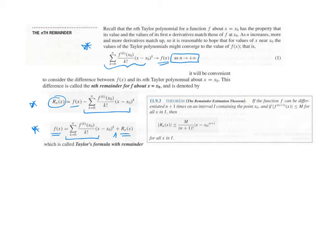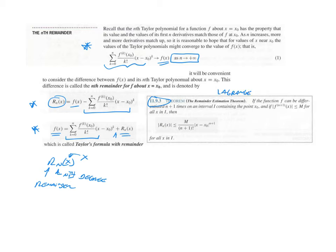The remainder is r sub n of x — not x sub zero, but of x. The real focus of the chapter and the last topic of the course is Theorem 11.9.3, the remainder estimation theorem, sometimes referred to as Lagrange error bound.